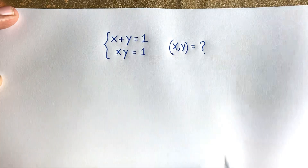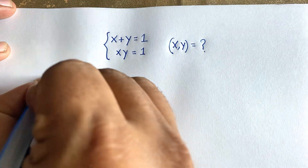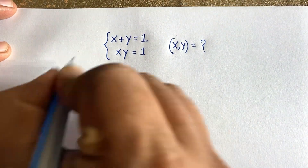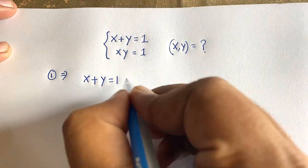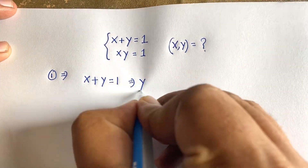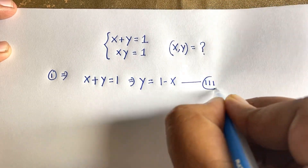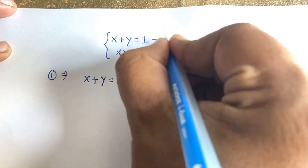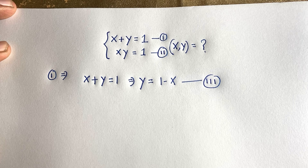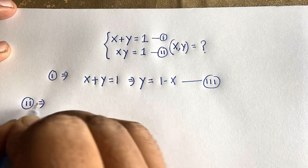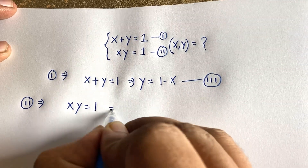We'll find the values of x and y. Our first equation is x plus y equals 1. From this, we can see that y is equal to 1 minus x — this is our third equation. Our second equation is xy equals 1.